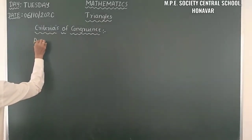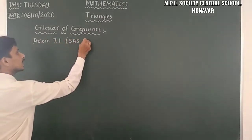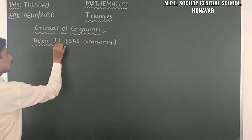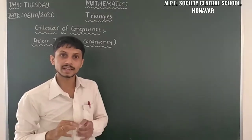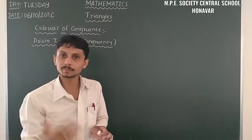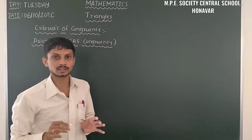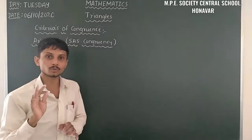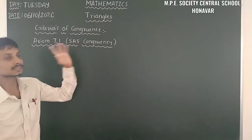Axiom 7.1 is also called SAS congruency. An axiom is a statement we can accept as true without any proof needed. Axiom 7.1 or SAS congruency — let us first understand what SAS means. SAS stands for Side-Angle-Side congruency.